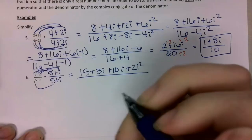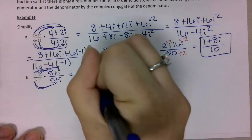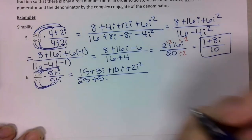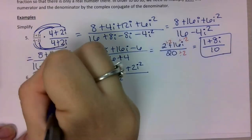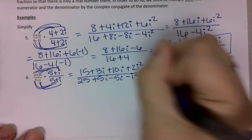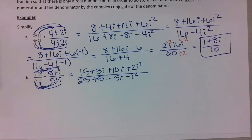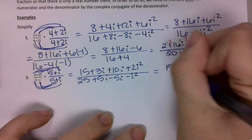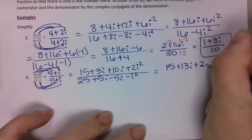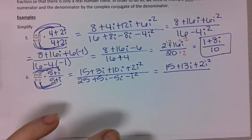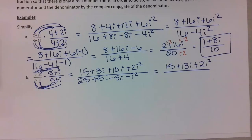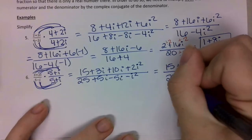Same thing on the denominator: 5 times 5 is 25, 5 times i is 5i, negative i times 5 is negative 5i, and negative i times i is negative i squared. Then combining the terms in the middle, I have 15 plus 13i plus 2i squared. On the denominator, those i's cancel out, so I just have 25 minus i squared.